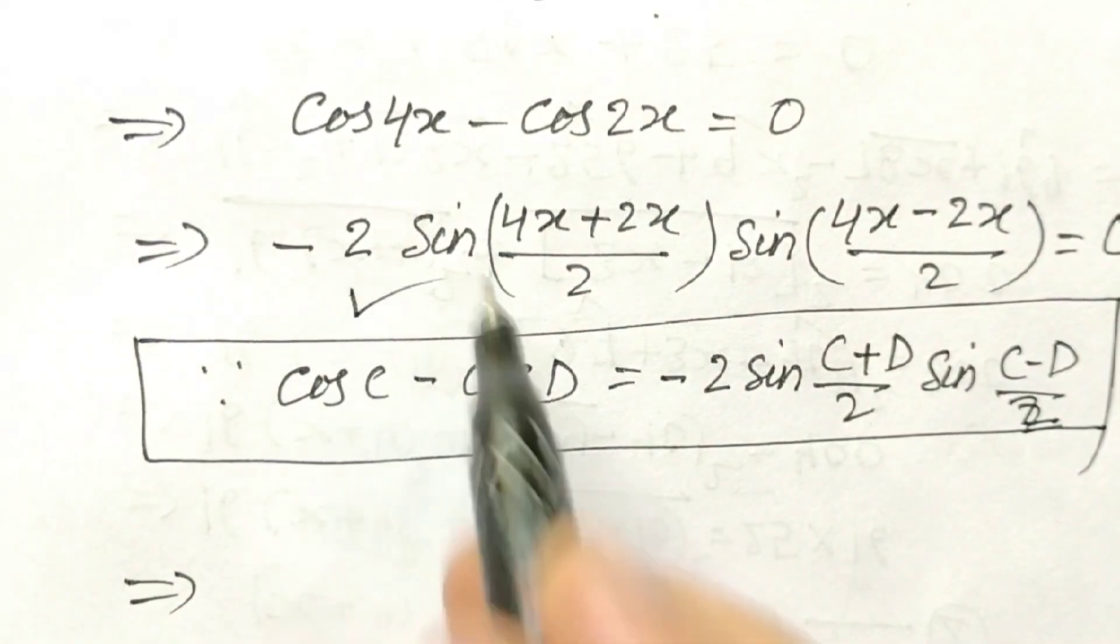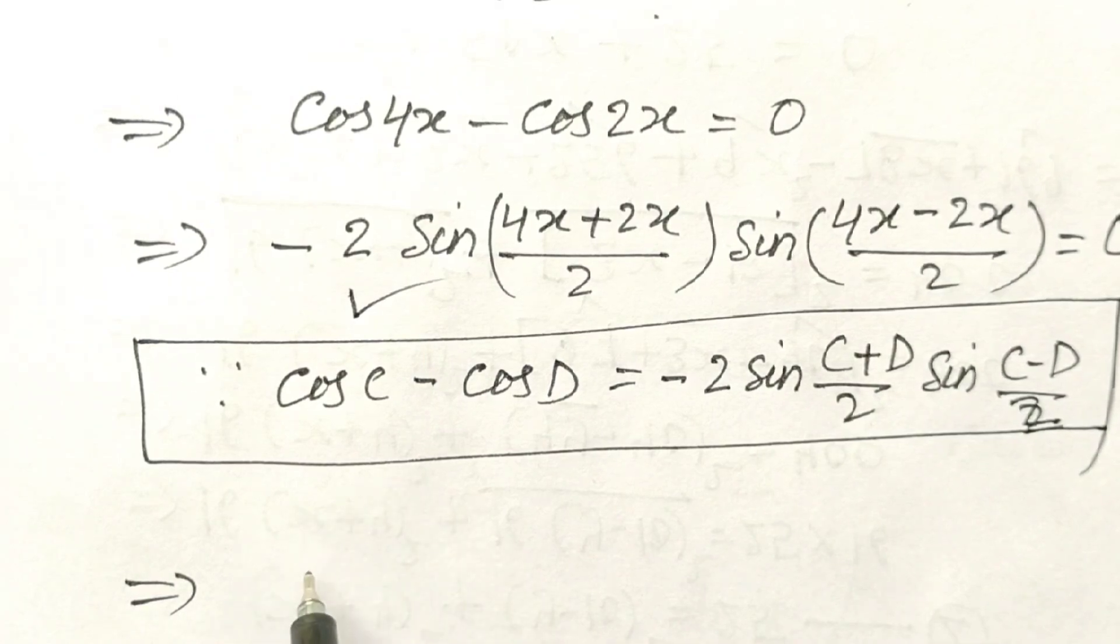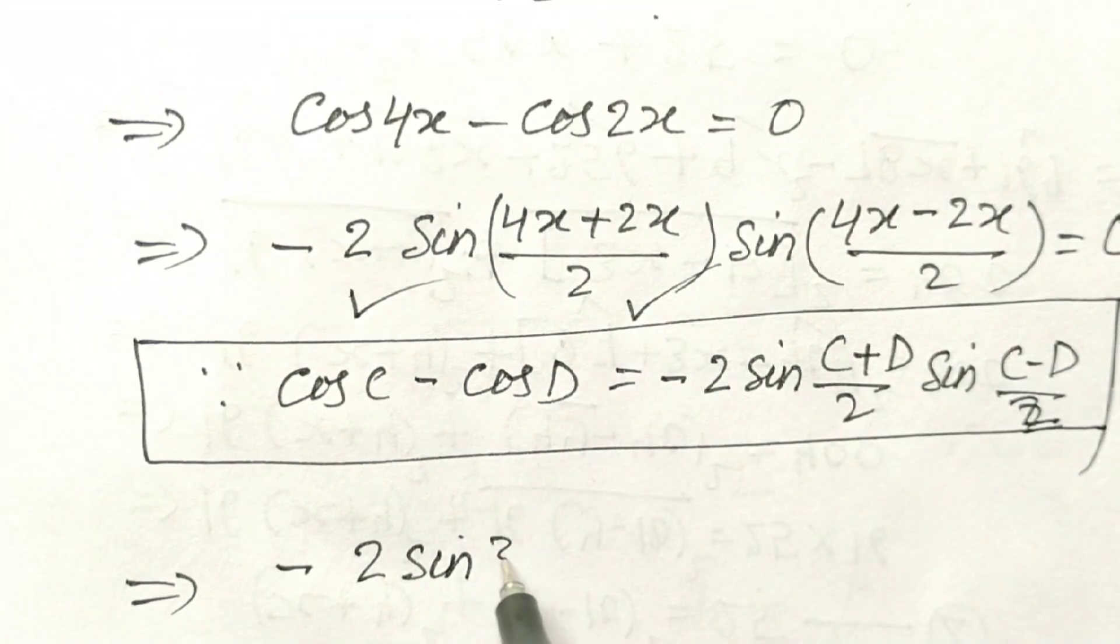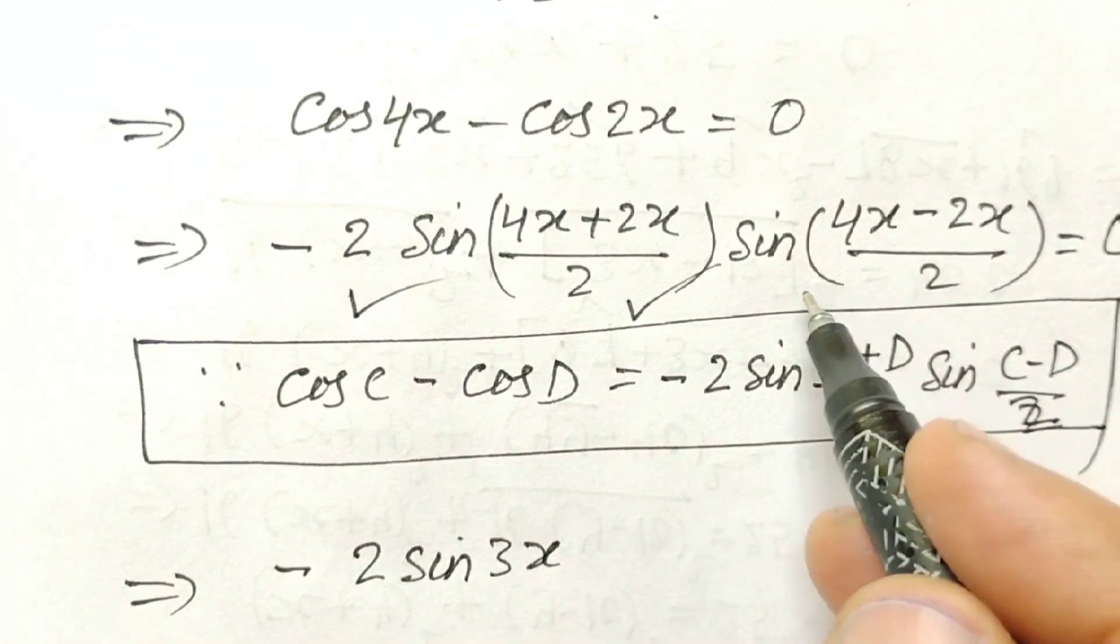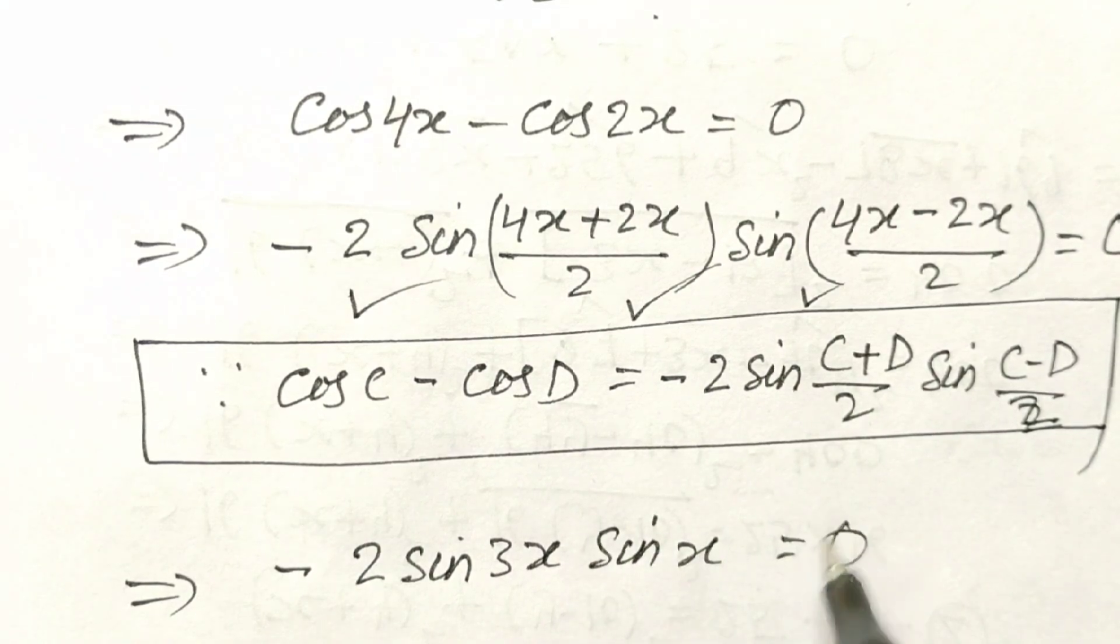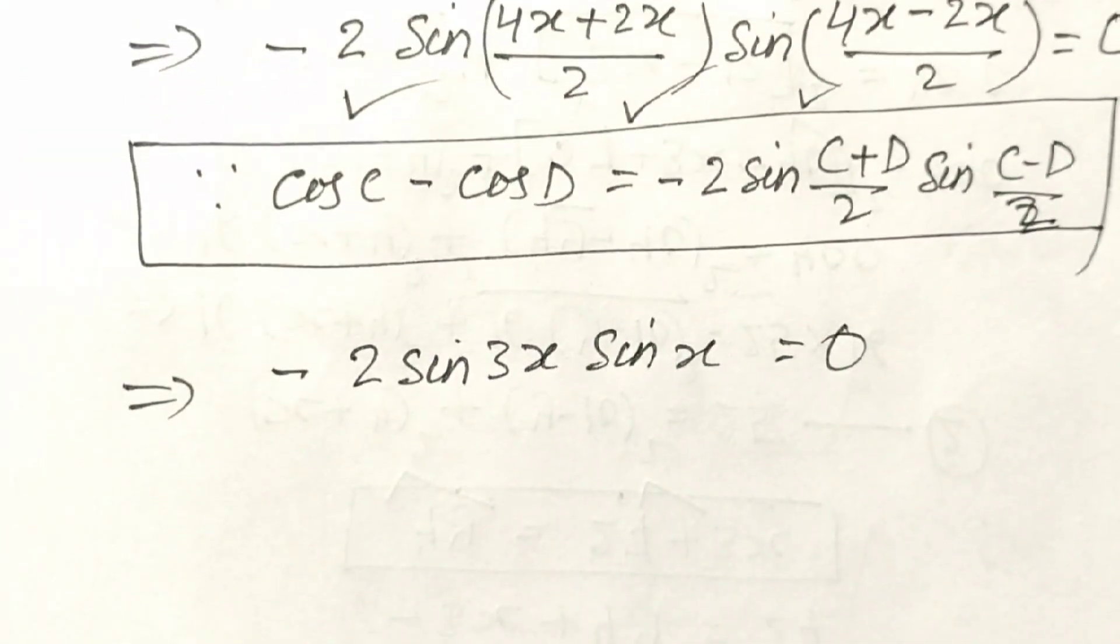So, this will become minus 2 sin 3x. And here, sin x is equal to 0.